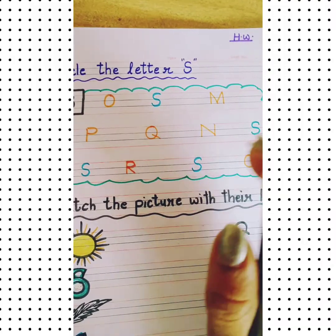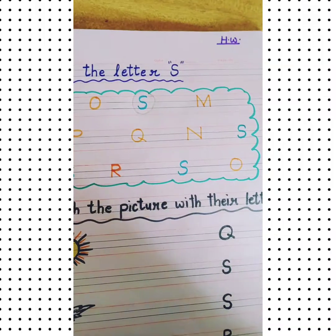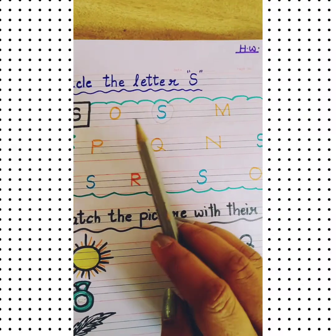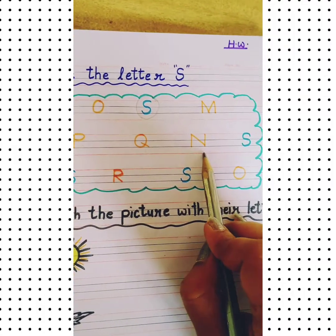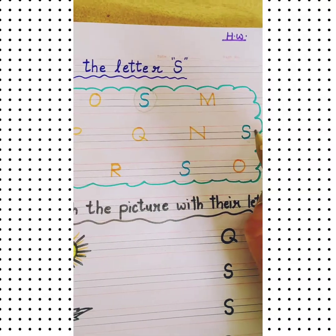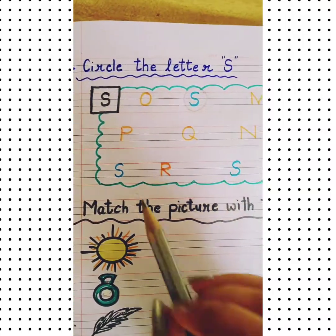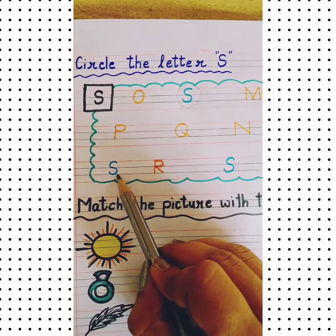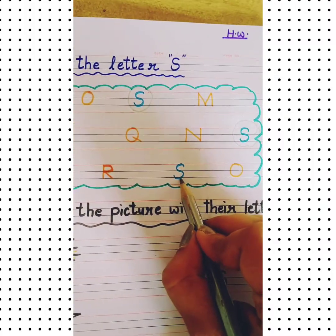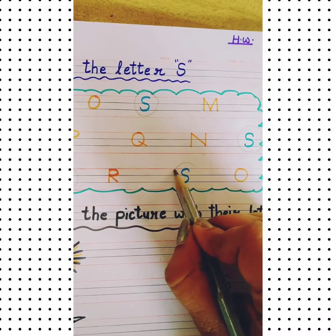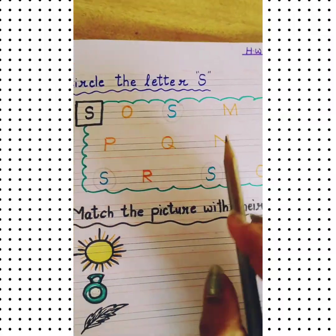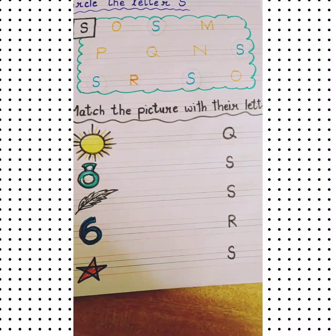You have to find out letter S. This is letter S — yes, circle it. This is letter S — yes, circle it. This is letter M — no. This is letter P — no. This is letter Q — no. This is letter N — no. This is letter S — yes, circle this. This is letter R — no. This is letter S — yes, circle it. This is letter O — no. Like this, you have to complete this activity.